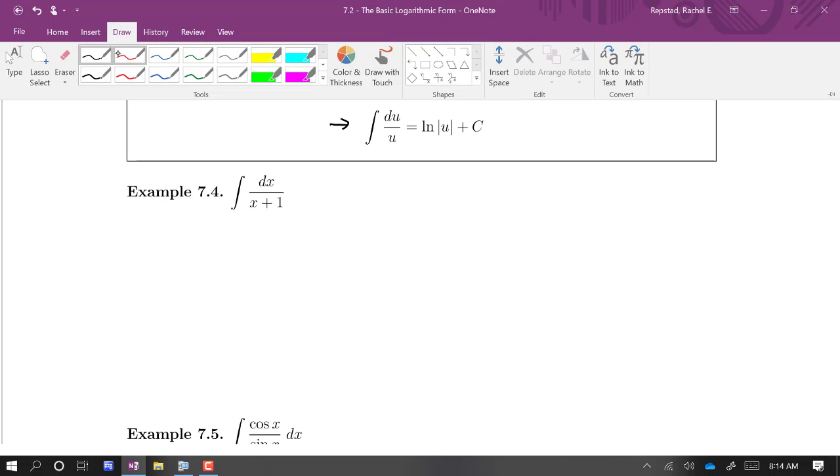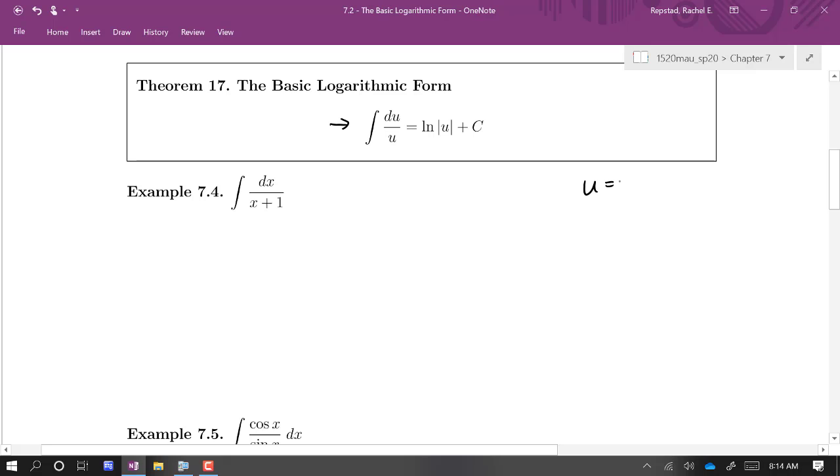So in this case, our first example, kind of a simple one. We're just going to let u equal x plus 1. Then du is equal to dx, just 1 dx. And if I make the substitution, then we have du over u. And that gives us ln of absolute u plus a constant. Putting our u back in, ln of absolute x plus 1 plus a constant.